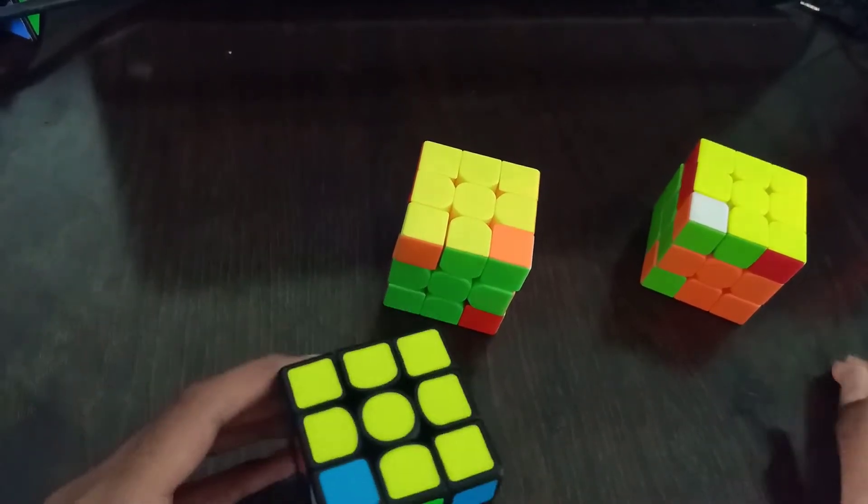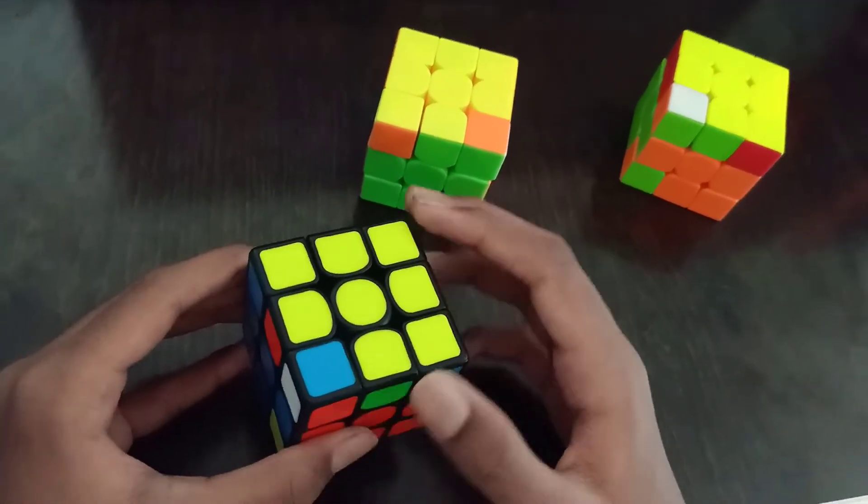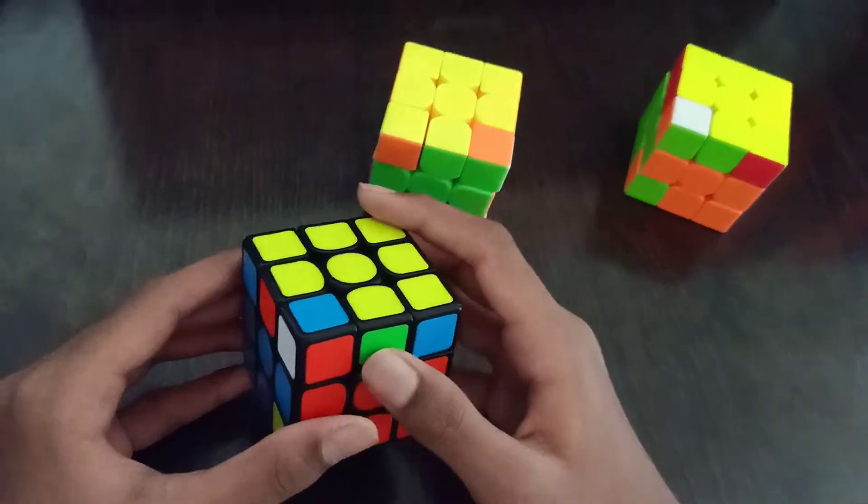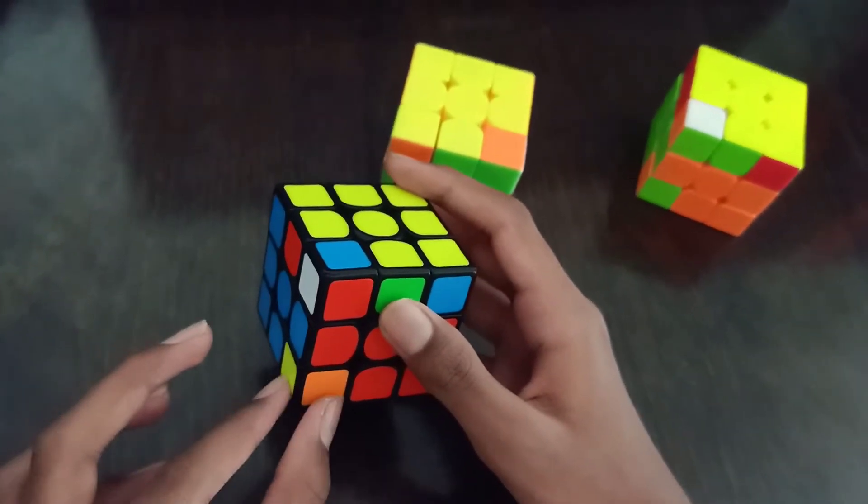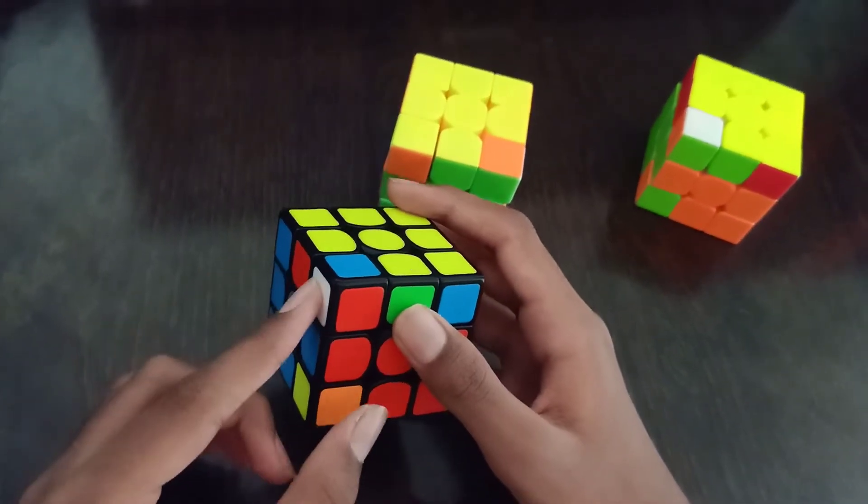For the first case, we have a situation like this where everything is solved, just the corner needs to go right here and the bottom color is on the left.